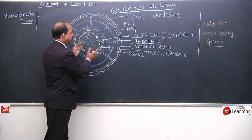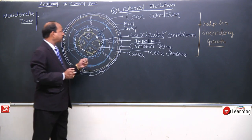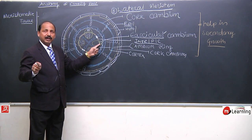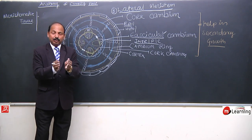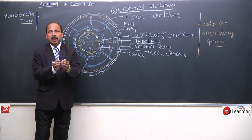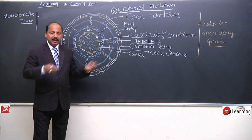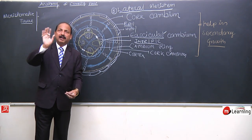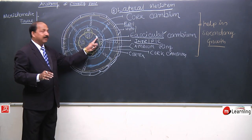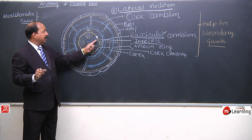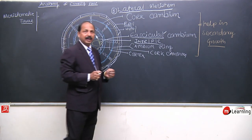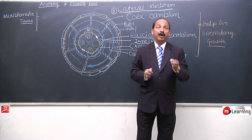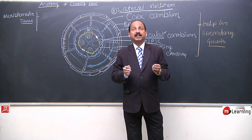One important point: when was lateral meristem being formed? Fascicular cambium is lateral in position and was present in the plant from the beginning. But the cambium ring — when secondary growth of the plant started, when the plant's diameter began to increase, at that time inter-fascicular cambium was formed. When the plant was growing in length, inter-fascicular cambium was not formed. This means lateral meristem helps in the increase of plant diameter, which we call secondary growth.